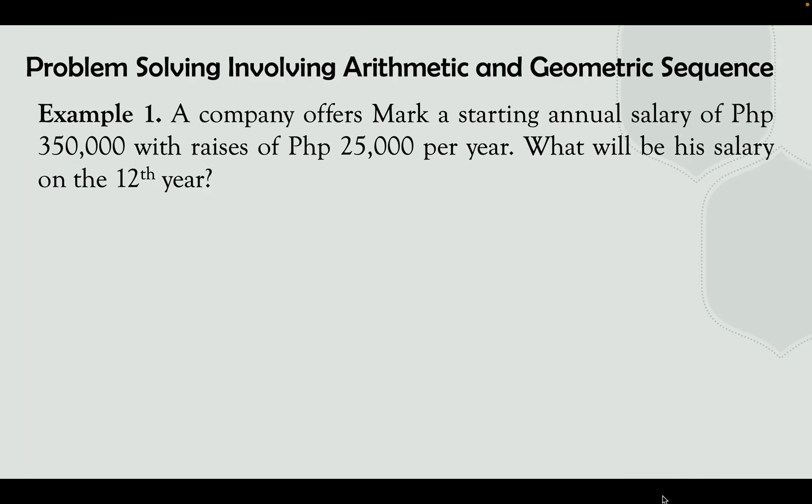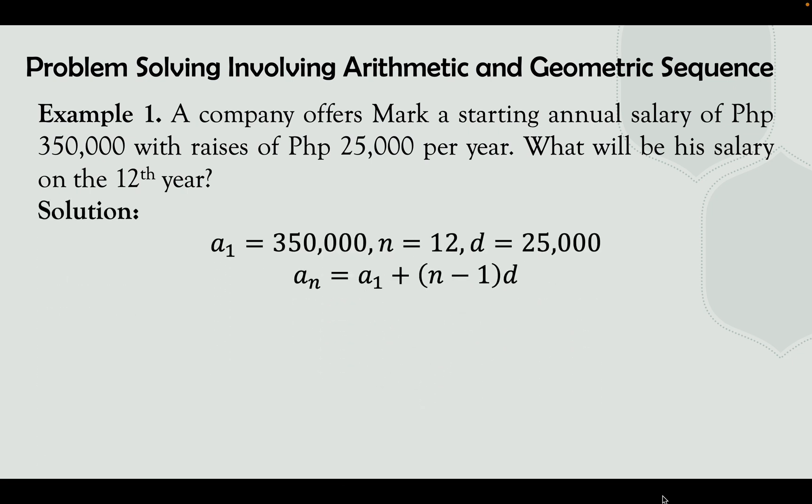Example number 1: A company offers Mark a starting annual salary of 350,000 pesos with raises of 25,000 pesos per year. What will be his salary on the 12th year? To solve, we identify: the first term a sub 1 is 350,000 pesos, n equals 12 for the 12th year, and the common difference d is 25,000 pesos per year. We substitute into the formula: a sub n equals a sub 1 plus (n minus 1) times d.